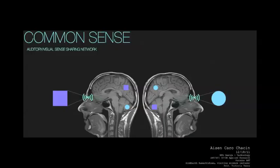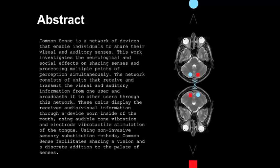My name is Aysen Karachasin and I'm going to present to you my project proposal: Common Sense, an auditory-visual sense sharing network. Common Sense is a network of devices that enable individuals to share their visual and auditory senses. The network consists of units that receive and transmit the visual and auditory information from one user and broadcast it to other users through this network.